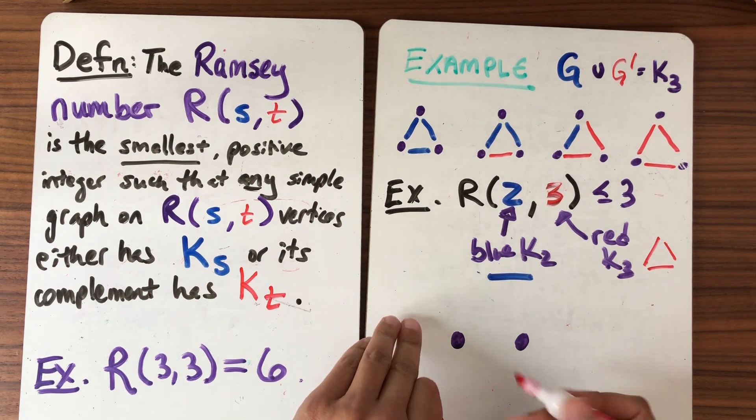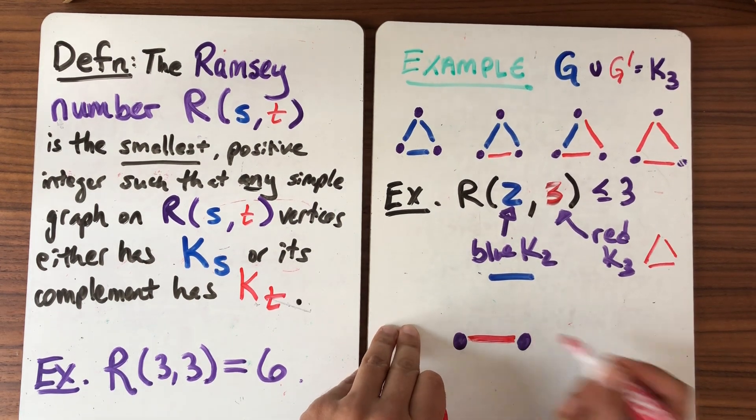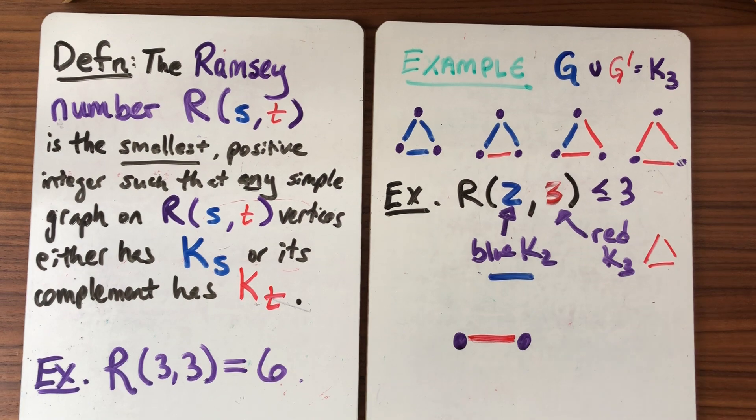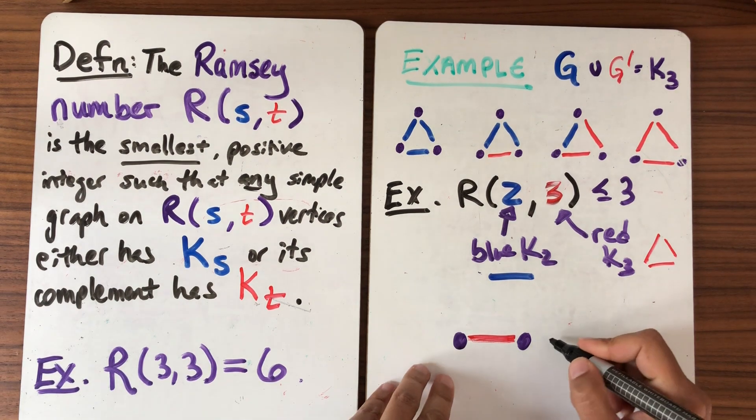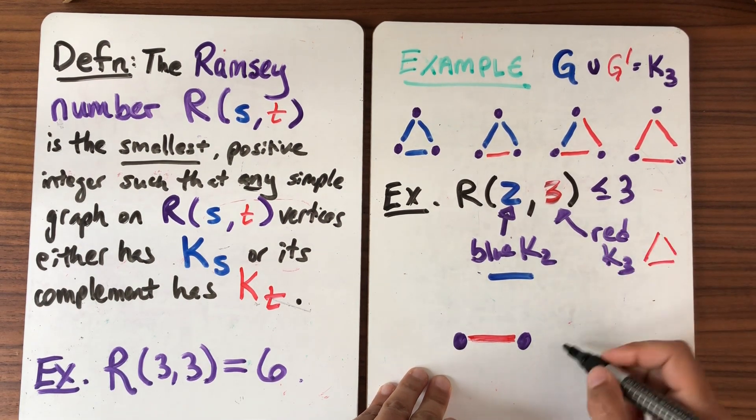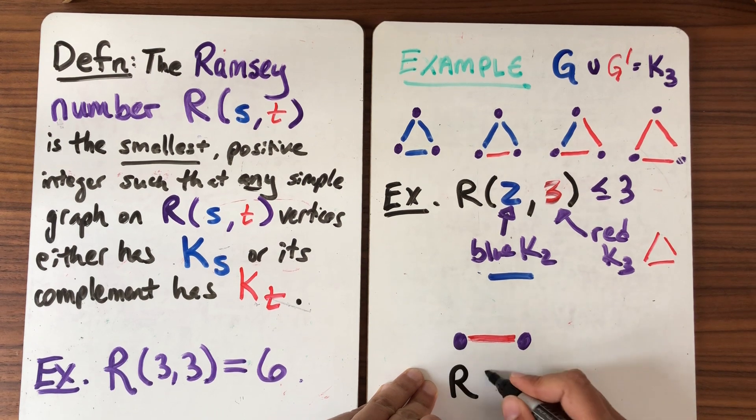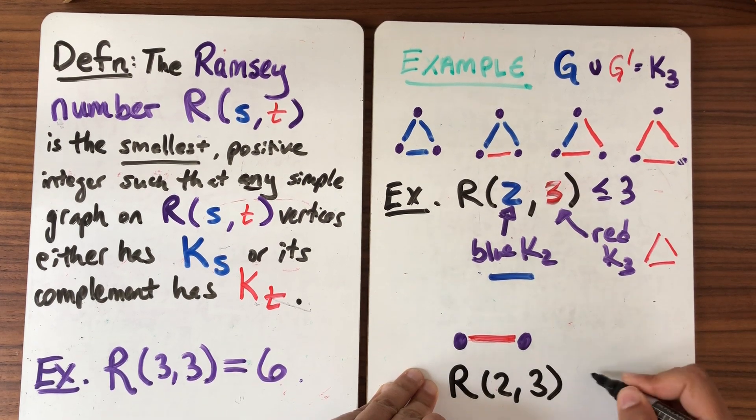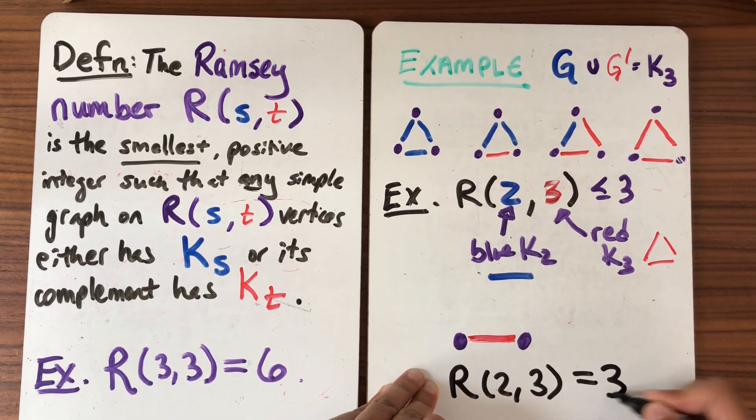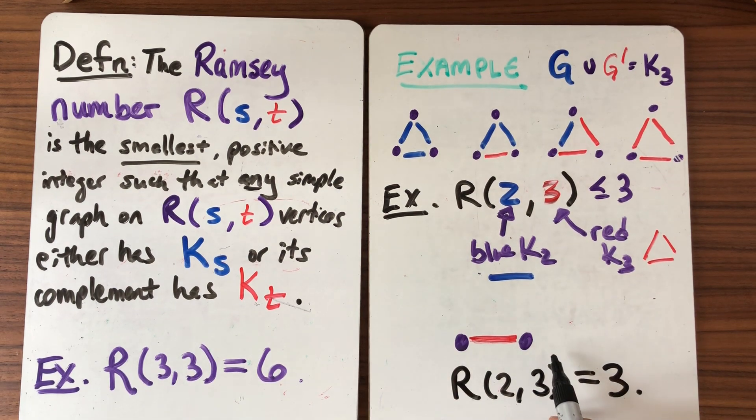Well the way to do that is don't put a blue edge. Okay fine, so I'll put a red edge. And since I only have one edge I don't have a triangle. So this proves that the answer is actually equal to 3. So this proves that R(2,3) is honestly equal to 3 because it cannot be 2.